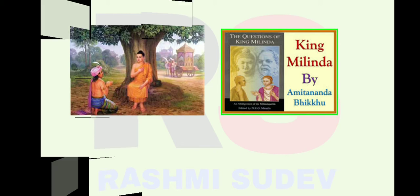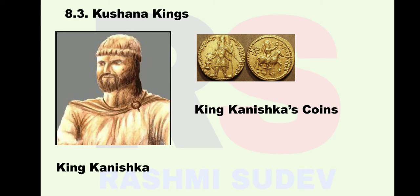8.3 Kushana Kings: India was often attacked by tribes from central Asia. One such tribe was the Kushanas. They established their empire in the northwestern region and in Kashmir in the first century CE. The Kushana kings were the first to start making gold coins, and they put images of Gautam Buddha and different Indian gods on the coins.